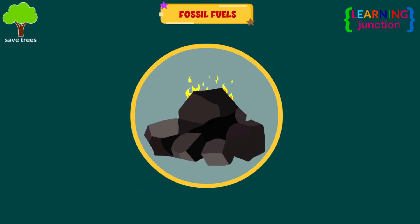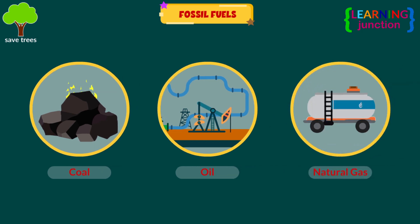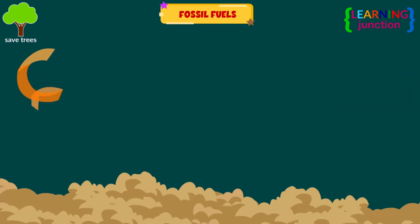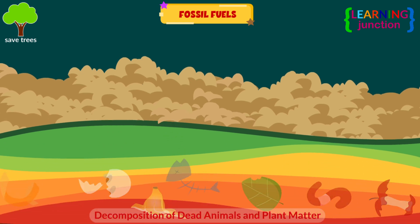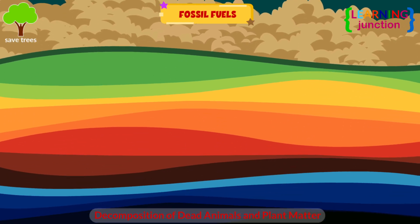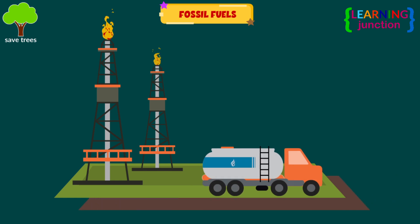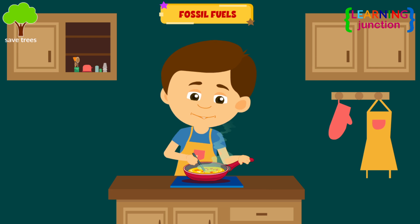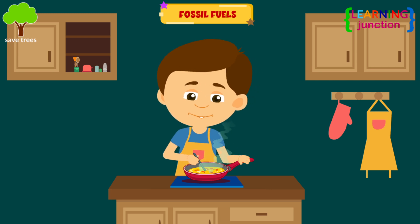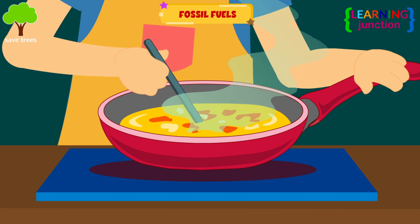Fossil fuels. The three main fossil fuels are coal, oil, and natural gas. These are the results of the decomposition of dead animals and plant matter buried deep in the Earth's crust. These fuels are then pumped from underground and used in a number of ways. Here, natural gas is sent through pipelines to your kitchen so that you can cook food.